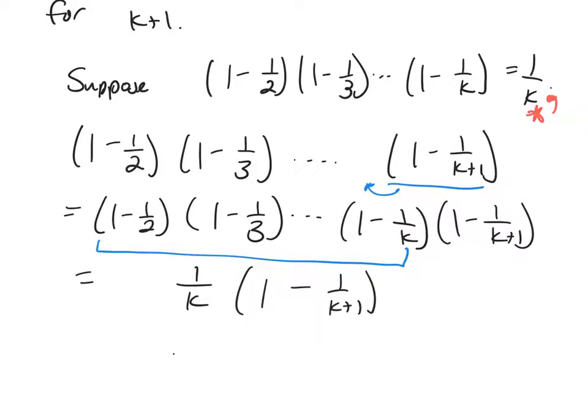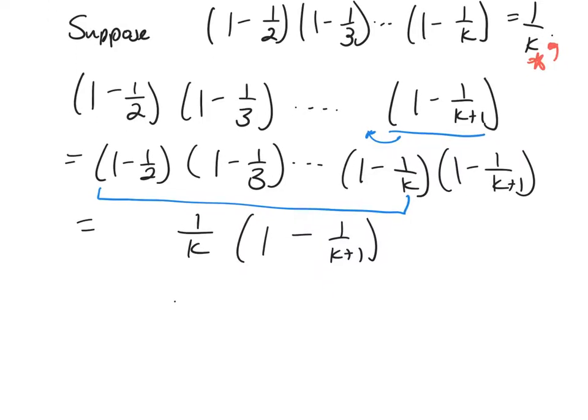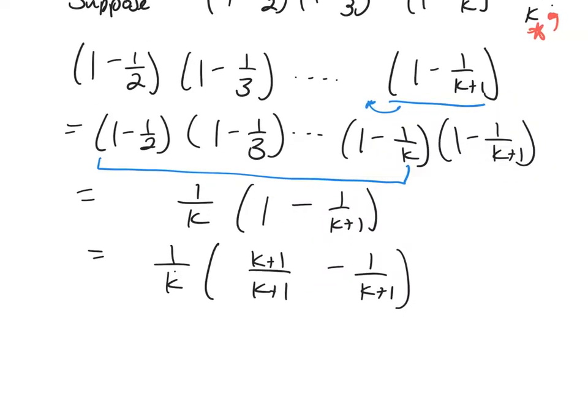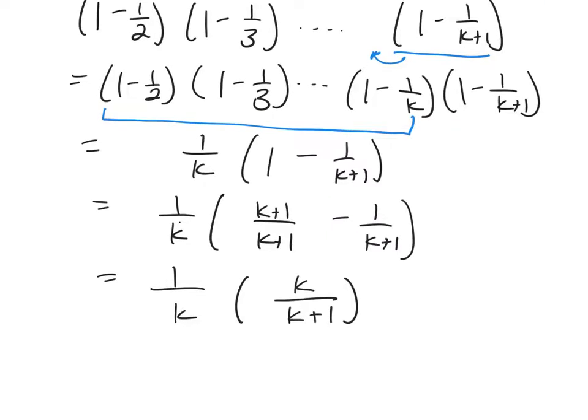So it's 1 over k times 1 minus 1 over k plus 1. And now what I'm going to do, we want to work our way down to having one fraction, so I'm going to get a common denominator on the inside, k plus 1 over k plus 1. And now I can combine them to be k over k plus 1. And the k's cancel to leave me with 1 over k plus 1.